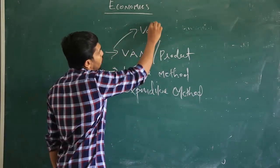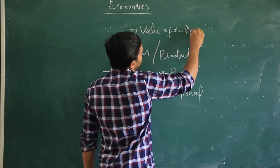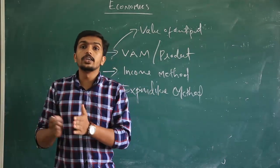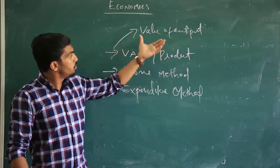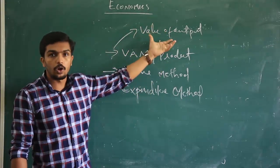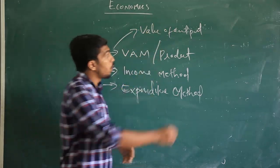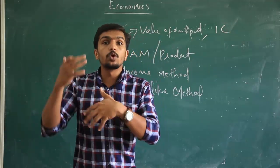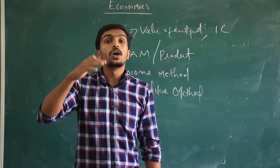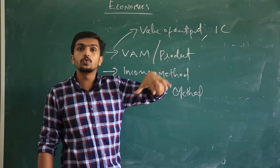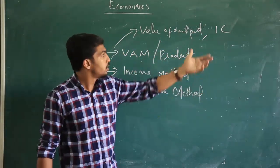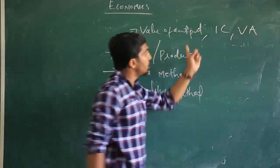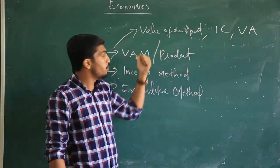The first component is the value of output. We look at the total value of output in an economy — all sales, total stock, and internal and external transactions — to identify the total value of output. The second concept is intermediate consumption, which refers to goods used by firms to produce further goods. So intermediate consumption means the goods used in producing other goods. The three components are: value of output, intermediate consumption, and value added. This is used in the value added method or product method.